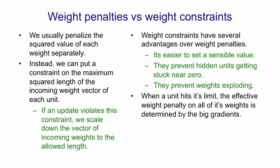One other subtle thing that weight constraints do is that when a unit hits its constraint, the effective penalty on all of its weights is determined by the big gradients. If some of the incoming weights have very big gradients, they'll be trying to push the length of the incoming weight vector up, and that will push down on all the other weights.